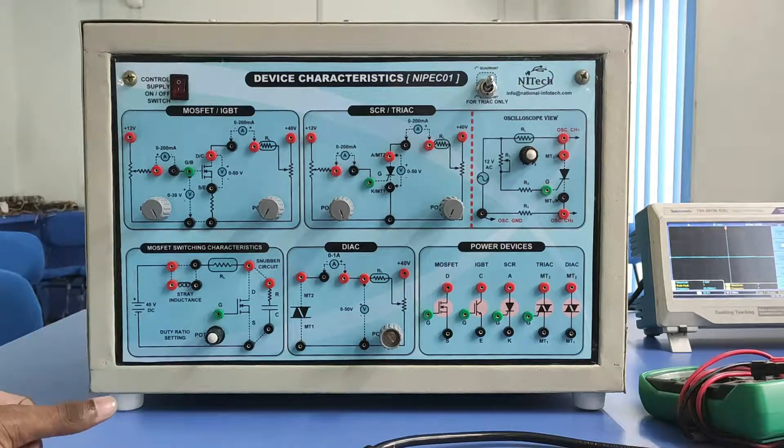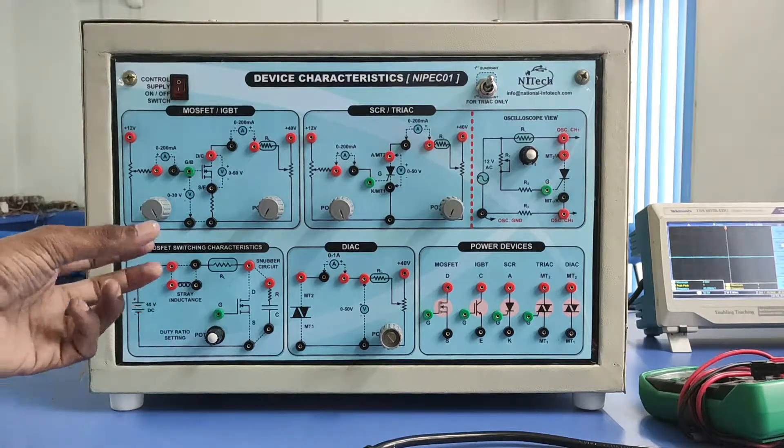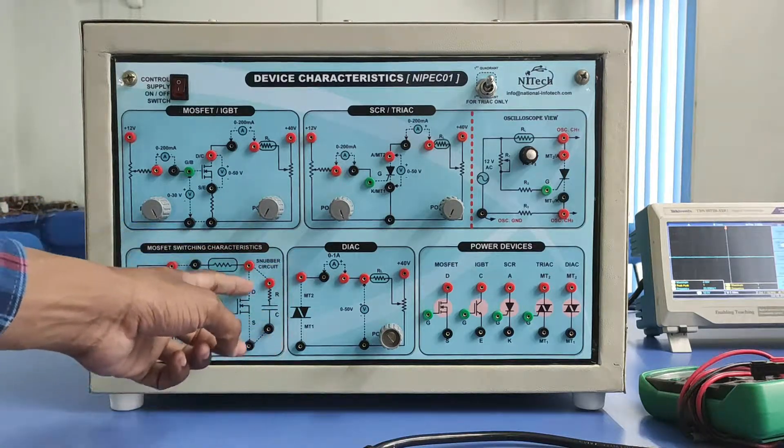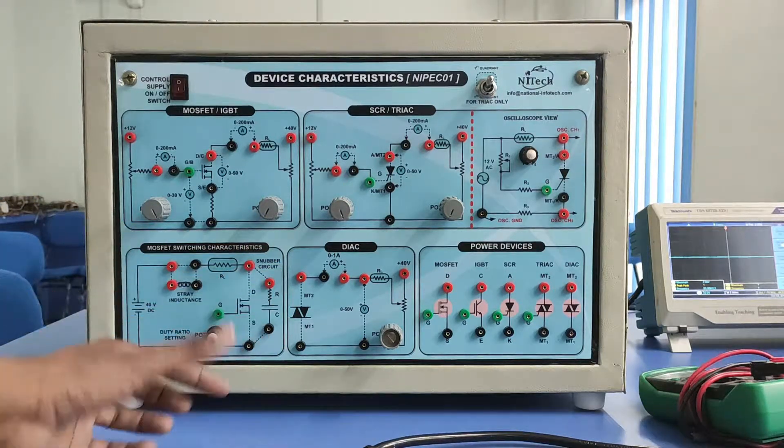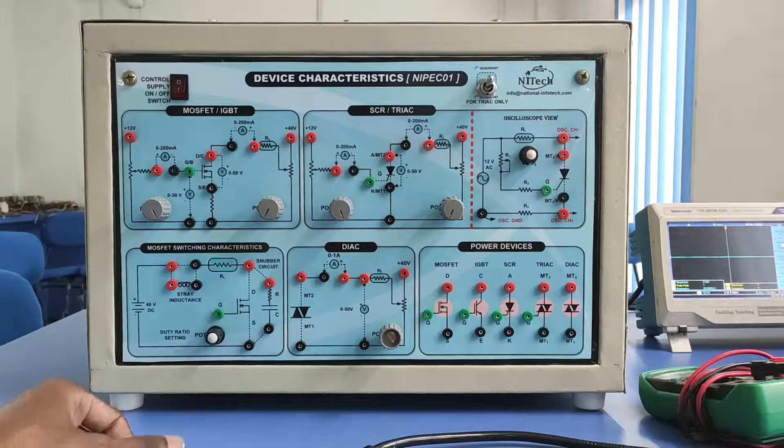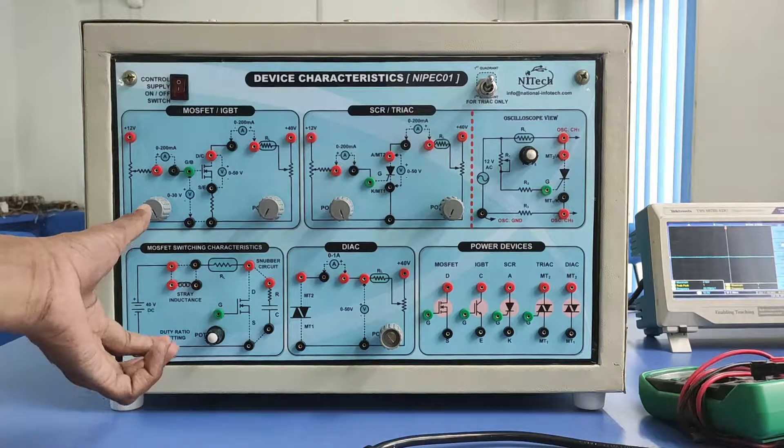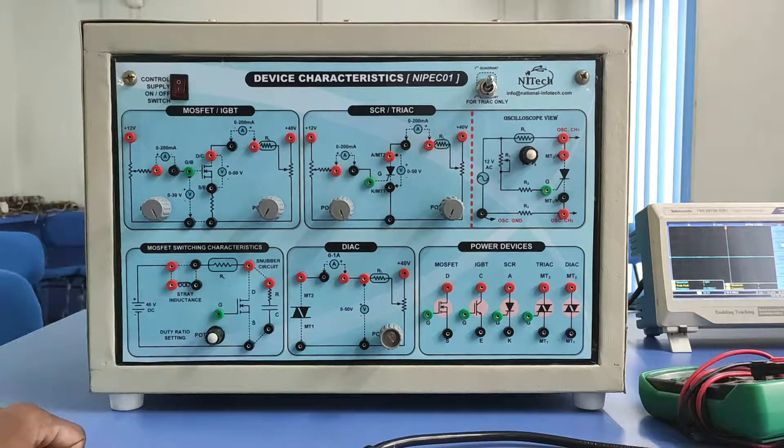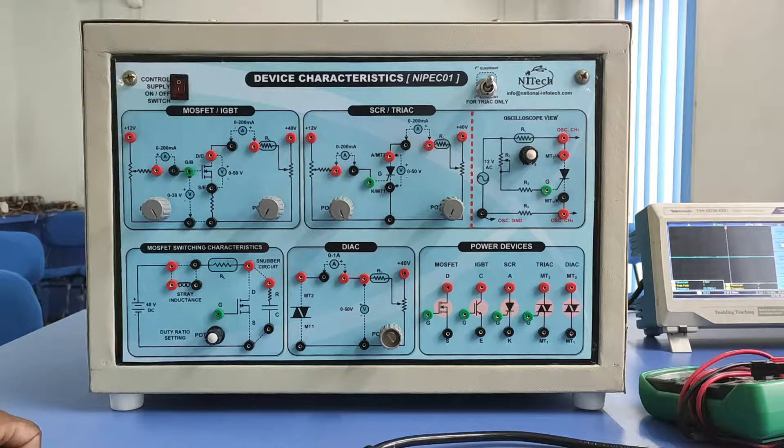This will give some understanding of MOSFET switching characteristics. Why we use snubber circuit? The main importance of snubber circuit will be understood by these characteristics or switching characteristics of the MOSFET, with inductance and without inductance. We will see the difference between these two cases.